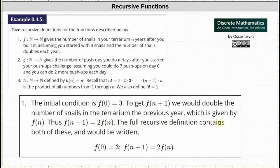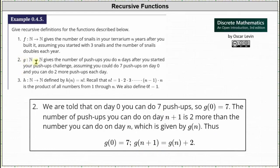The full recursive definition contains both the initial condition and the recurrence relation: f(0) = 3 and f(n+1) = 2·f(n). For number two, the function g gives the number of push-ups you can do n days after starting your push-ups challenge, assuming you can do seven push-ups on day zero and two more push-ups each day. So g(0) = 7, and g(n+1) = g(n) + 2.